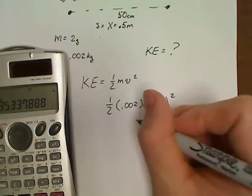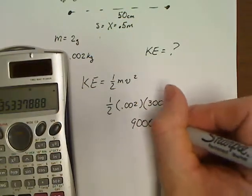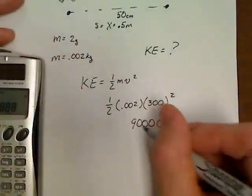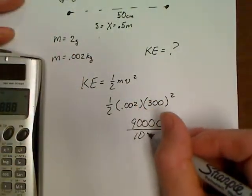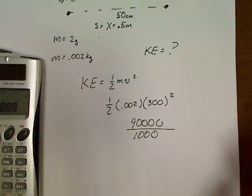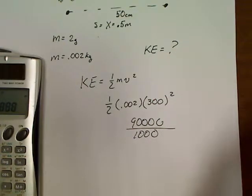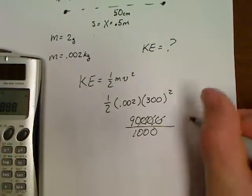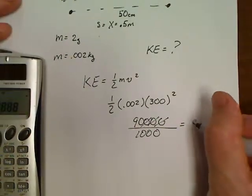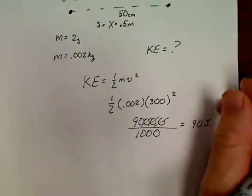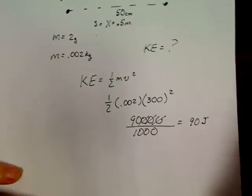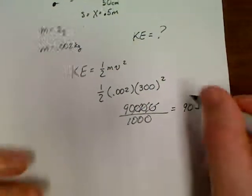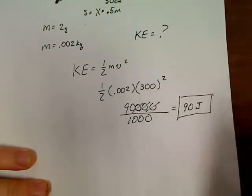So, all we've got to do is 300 square. Let's see, that would be 9, 0, 0, 0, 0. Half of 0.002 is 0.001, which is the same as 1 over 1,000. So, that's the same as dividing this by 1,000. Yes, that's right. We're not going to use a calculator if we can have it. So, that's cancel, so our answer is 90 joules. Get that calculator out of my sight. So, we've got 90 joules of energy. So, there is our answer to part A.